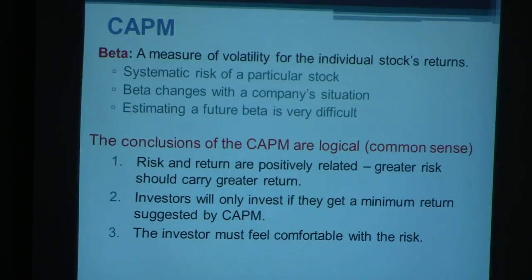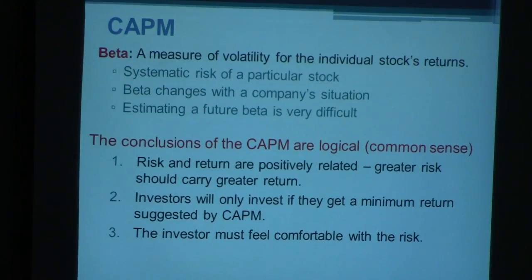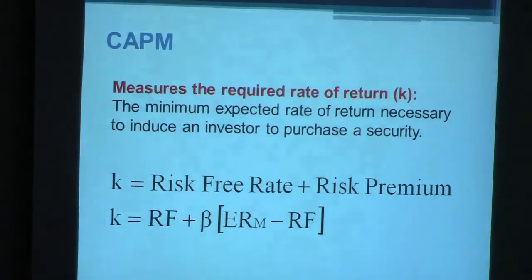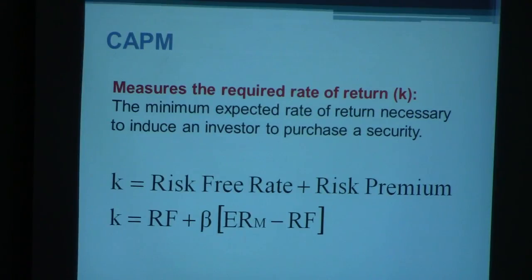The investor identifies the risk factors for a particular company and makes an informed decision. Beta is the systematic risk of a particular stock, and it is an estimate — not a purely objective number. Everything in finance tends to be subjective. To summarize, the formula is: K equals RF, the risk-free rate, plus beta times (expected rate of market minus RF). Remember the order of operations — do the multiplication first, then add the risk-free rate, and you end up with K for the company.